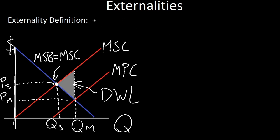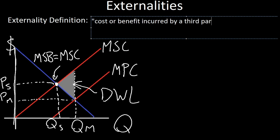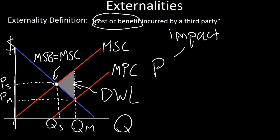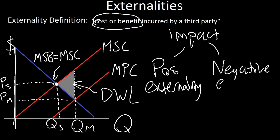So first, what is an externality? According to Investopedia, an externality is a cost or benefit incurred by a third party. So this is your impact, and it can either be positive or negative. Otherwise known as a positive externality or a negative externality.